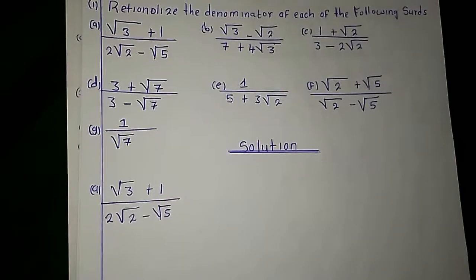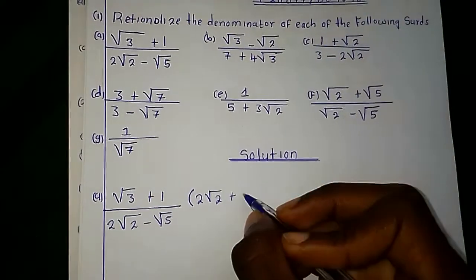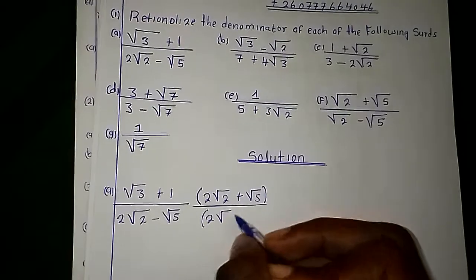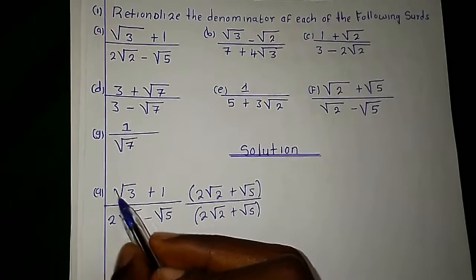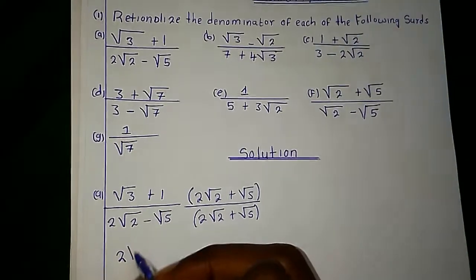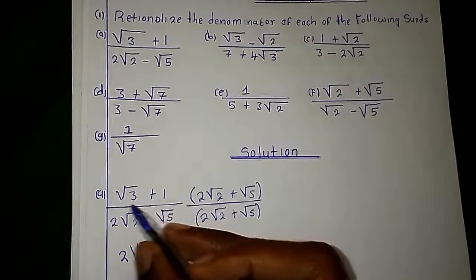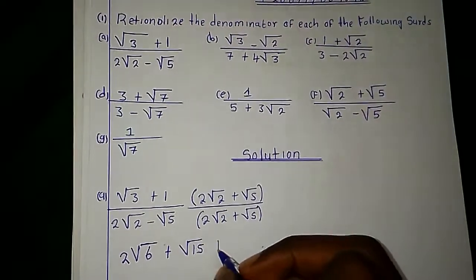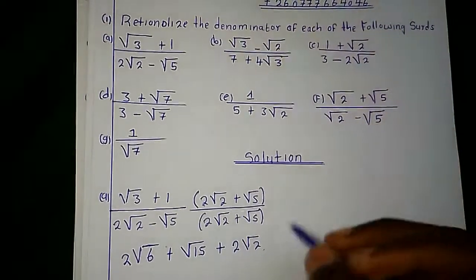I'm going to introduce the conjugate of the denominator. The conjugate simply means instead of putting a minus, I'm going to put a positive — I've conjugated it. I apply the same concept on top too, putting a positive. Now I'm going to multiply. Root of 3 multiplied by 2 root 2 gives 2 root 6, plus root of 3 multiplied by root of 5 gives root of 15, plus 1 multiplied by 2 root 2.